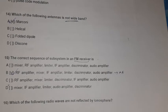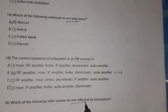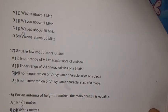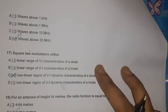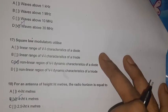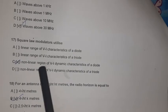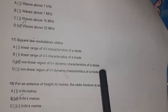Question 16: Which radio waves are not reflected by the ionosphere? Waves above 30 MHz are not reflected by the ionosphere. Question 17: Square law modulators utilize the non-linear region of the voltage-current dynamic characteristics of a diode.